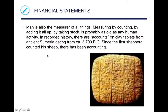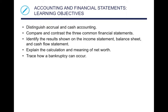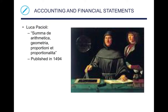Financial statements — man is also the measure of all things. Measuring by counting, by adding it all up, by taking stock is probably as old as any human activity in recorded history. There are accounts on clay tablets from ancient Sumeria dating from about 3700 BC. Since the first shepherd counted his sheep, there has always been accounting. The learning objectives for this chapter are to distinguish between accrual and cash accounting, compare and contrast the three common financial statements, identify the results shown on the income statement, balance sheet, and cash flow statement, explain the calculation and meaning of net worth, and have a better understanding of how bankruptcy can occur.